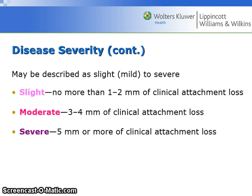Seriousness of disease is determined by the rate of progression over time and the response of tissues to treatment. Disease severity: slight is no more than 1–2 mm of clinical attachment loss; moderate is 3–4 mm; and severe is 5 mm or more of clinical attachment loss.